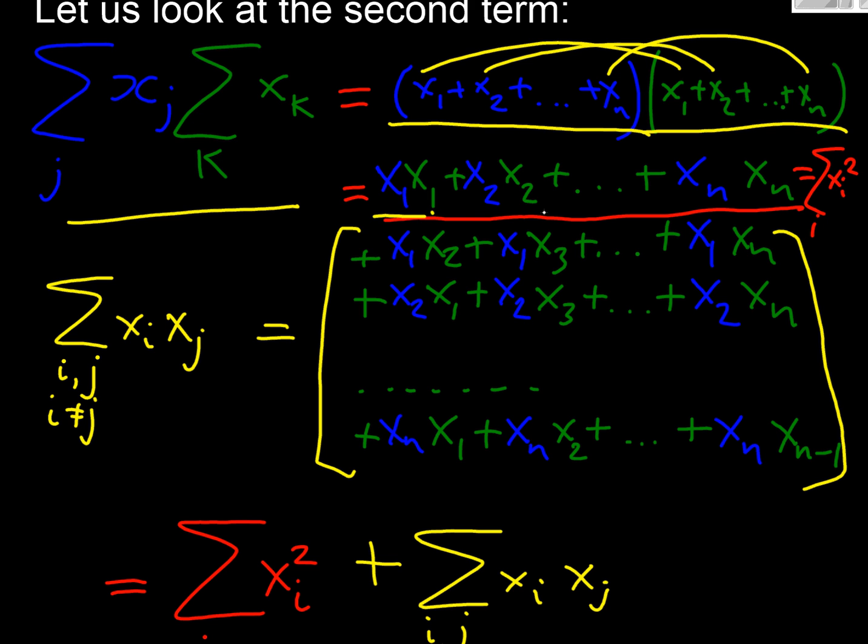So what we've got here is all the squares: x1 squared, x2 squared, x3 squared, all the way to xn squared, which of course in our terminology from above is just the sum of our x squareds.